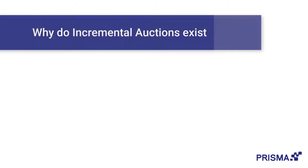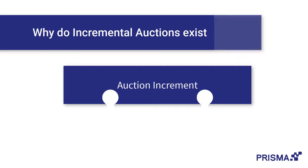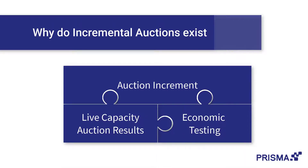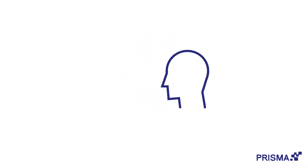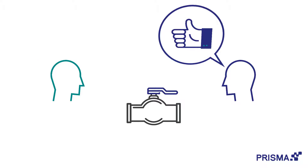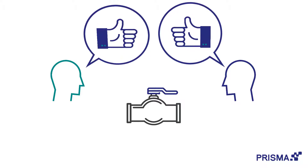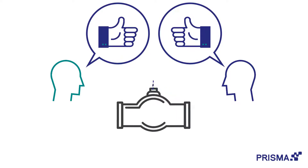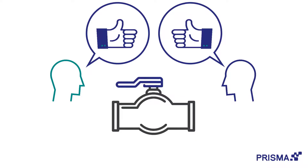Incremental auctions allow TSOs to work out when to invest in additional transport infrastructure based on a combination of live capacity auction results and economic tests performed by the TSO. For you as a shipper, this means you can actively take part in the shaping of future capacity marketing. If demand for a capacity level is high enough based on auction bids, TSOs can invest in more transport capacity.